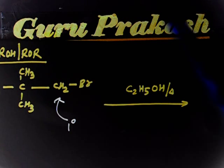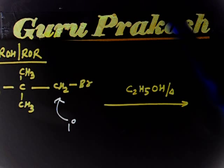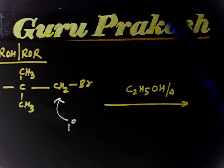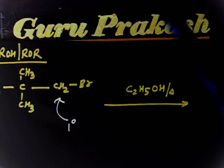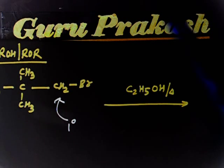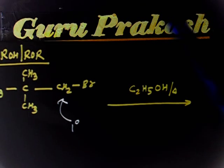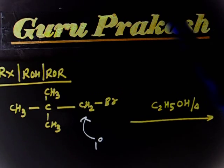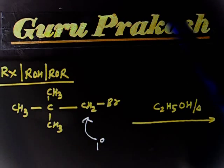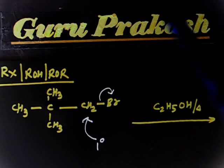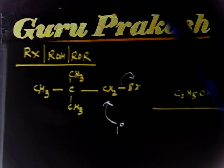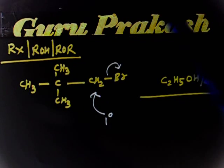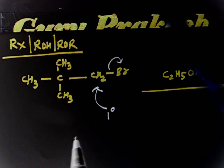Since we have a primary alkyl halide and the base is not strong — this is a weak base — we will have substitution in this case. Let us write down the substitution product. First, consider the SN1 mechanism: Br leaves and then you get a primary carbocation.